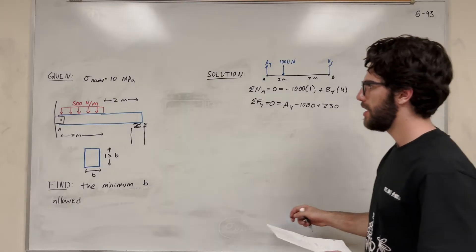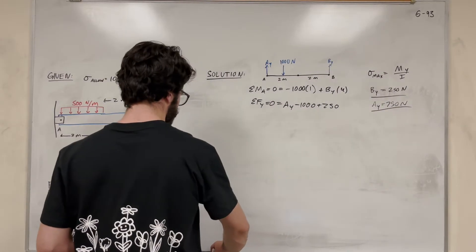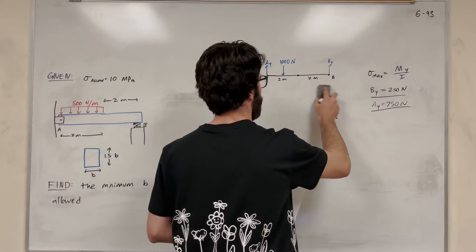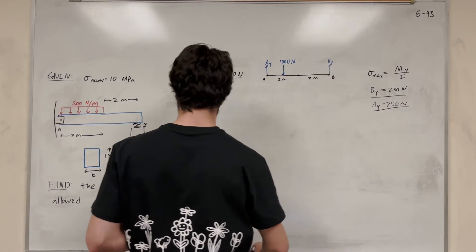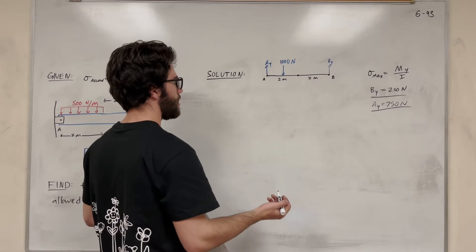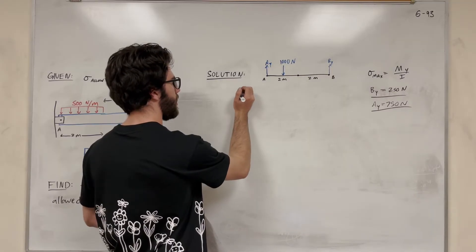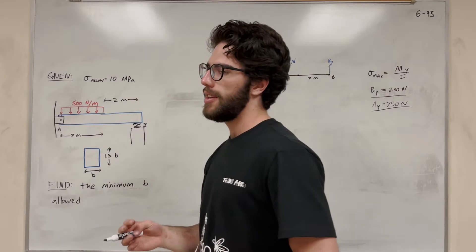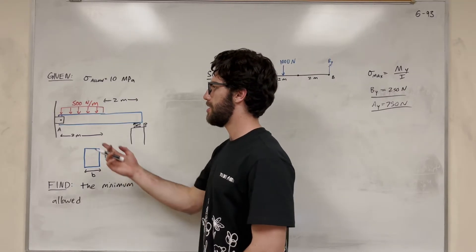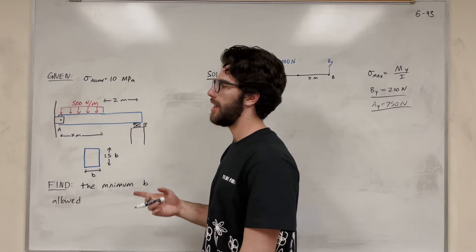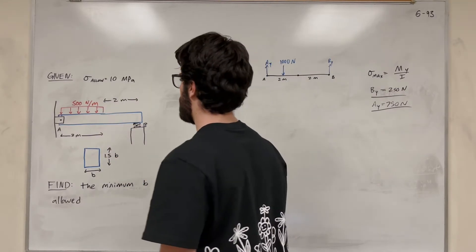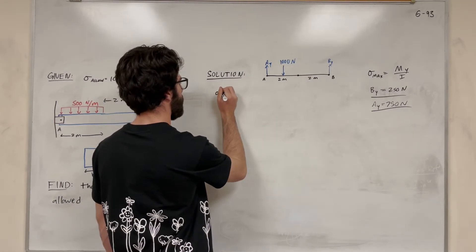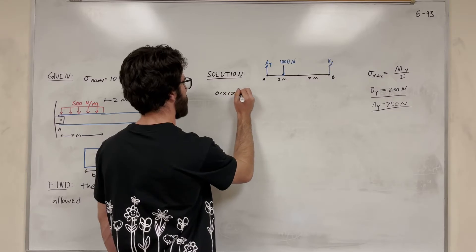Now we need to draw a moment diagram. Let's first find the equations for the moment diagram. We're going to break this into two sections because the distributed load ends at two meters. So let's look from zero to two meters, and then from two to four meters.